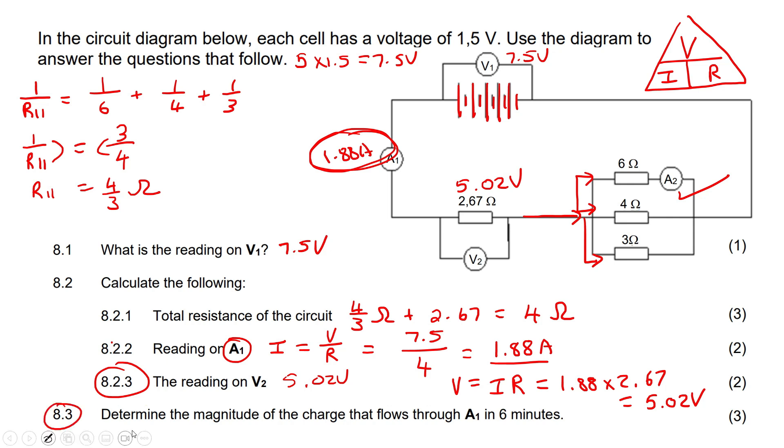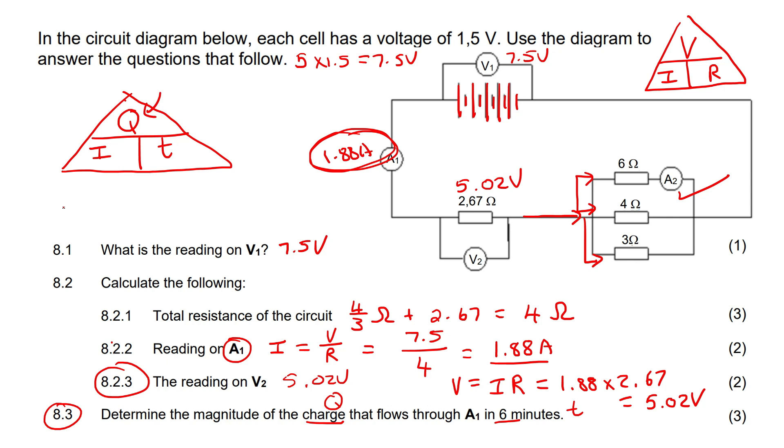Then this one says, determine the magnitude of the charge - now charge is Q - that flows through A1 in six minutes. So they've got time and charge. We should remember this formula or triangle. Remember, there's the IQT formula or triangle. So if we're looking for charge, then charge equals current multiplied by time.